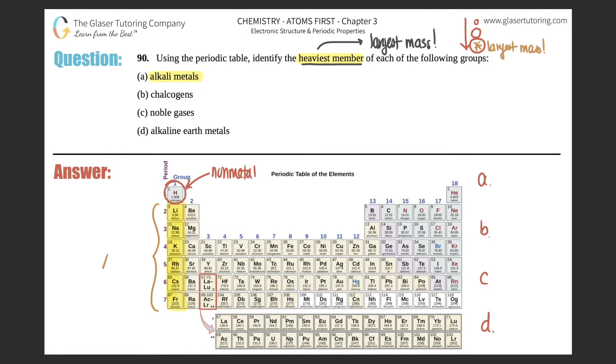Who is the heaviest? It's the one at the bottom, so it's element 87, francium. That's the answer for A. Francium has the largest mass - 223, that's crazy. Fr, francium.